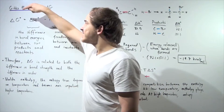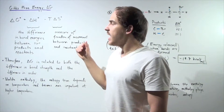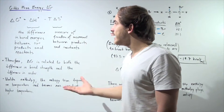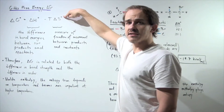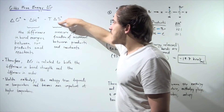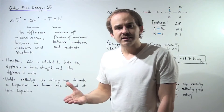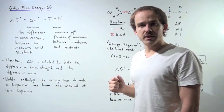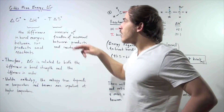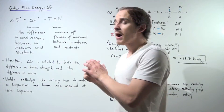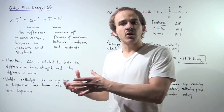Change in Gibbs free energy under standard state conditions is equal to change in H, our change in enthalpy under standard state conditions, minus the temperature in Kelvin multiplied by our change in S, also under standard state conditions. Change in S is simply our change in entropy between our products and our reactants — it's the measure of freedom of movement. If our entropy increases and becomes more positive, that means we have more freedom in our products than our reactants.